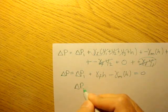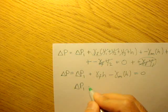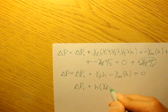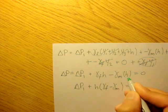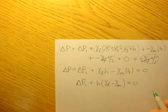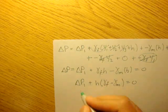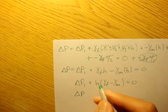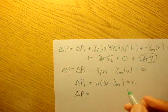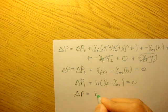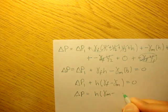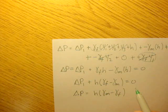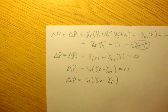Remember the total change in pressure of the entire path is equal to 0. So we can rewrite this as delta P1 + h(γf − γm) = 0. Distributing the h out, and bringing the term to the other side gives us: change in pressure equals h times (γm − γf).